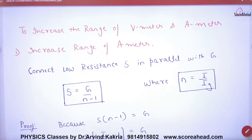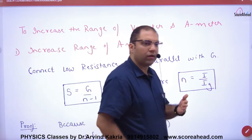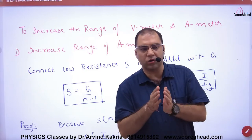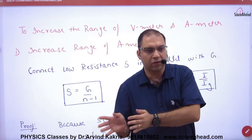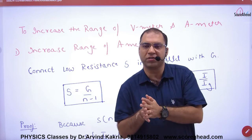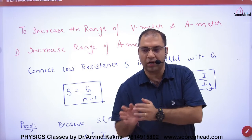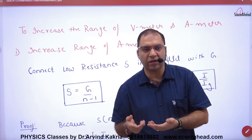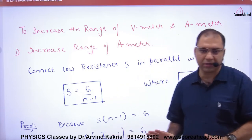Look, in galvanometer, we discussed that if there is a galvanometer, if we want to make it an ammeter, then we put low resistance shunt in parallel. And if we want to make it a voltmeter, then we put high resistance R in series. This we discussed last time.